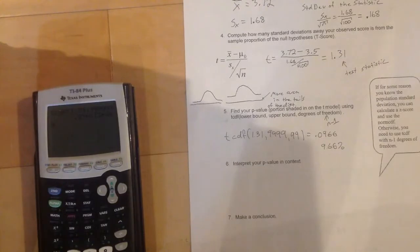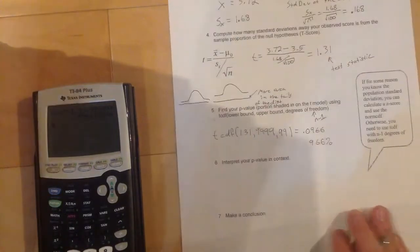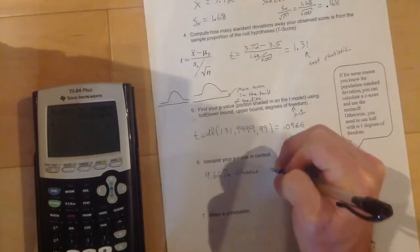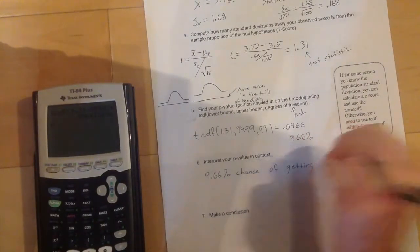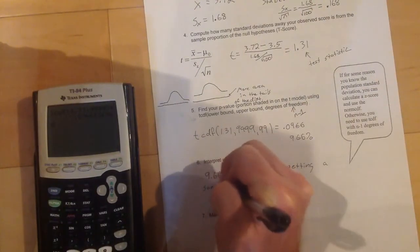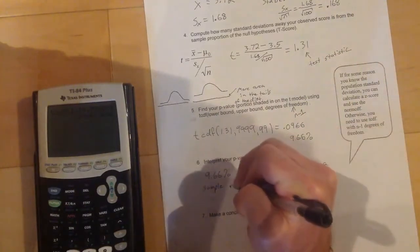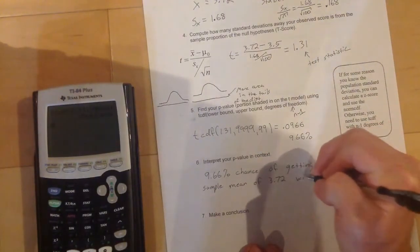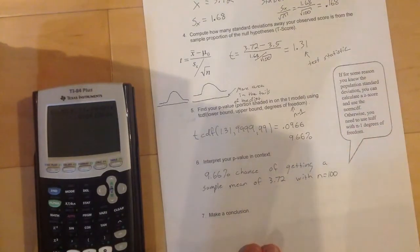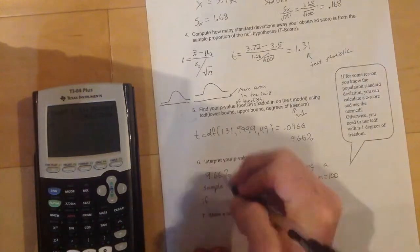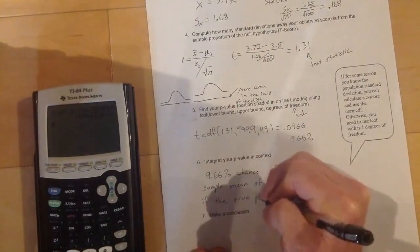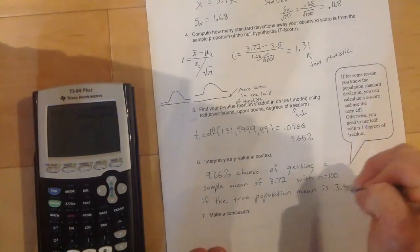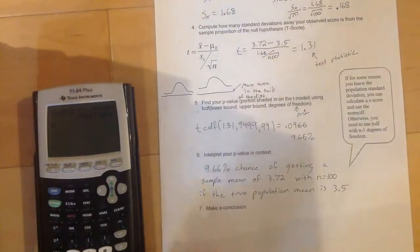Interpreting our p-value in context: there's a 9.66% chance of getting a sample mean of 3.72 with n equal to 100 if the true population mean is 3.5. The p-value is the odds of getting the sample result that you observed given the assumptions we have in place.